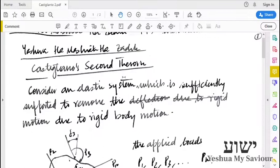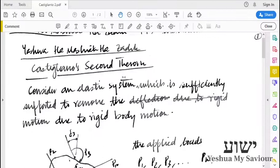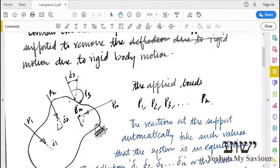Similar to Castigliano's first theorem, we have a body on which we have applied many forces: P1, P2, P3, and so on, Pn. This can be forces or moments, torques, anything that we want.